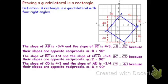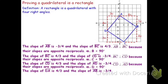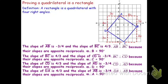We have one more angle to go — we still need to find the measure of angle A. The segments that make angle A are AD and AB. If we take a look at the slope of AD, it's 4 thirds, and the slope of AB is negative 3 fourths. Again, those are opposite reciprocal slopes, which means that segments DA and AB are perpendicular. If those segments are perpendicular, then the measure of angle A is 90 degrees.